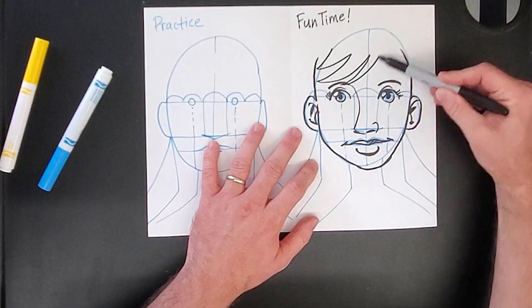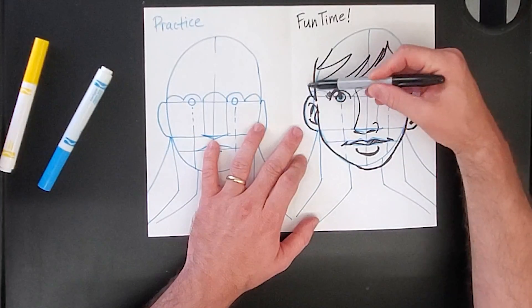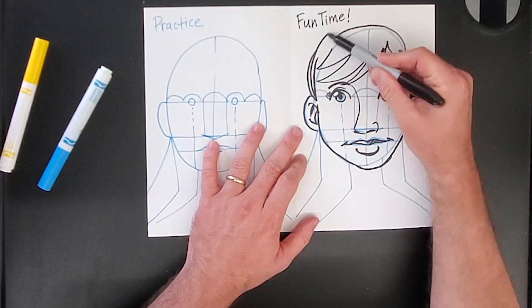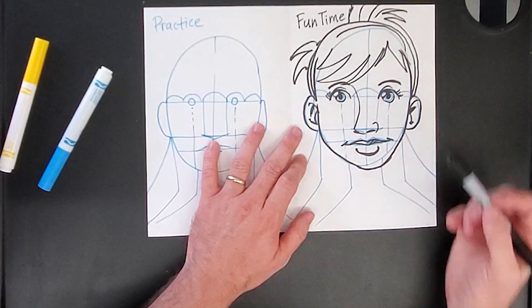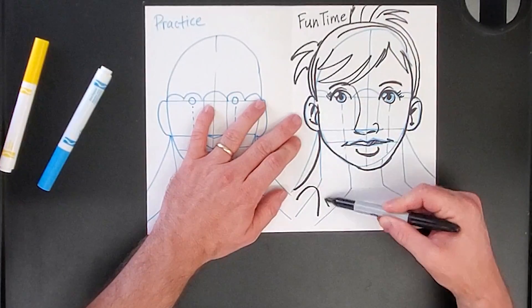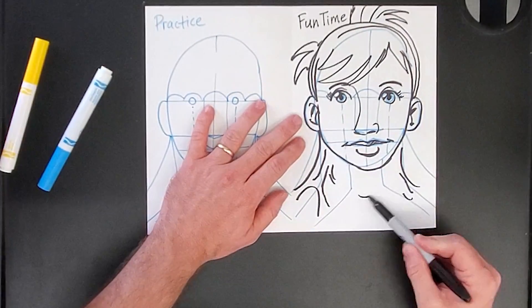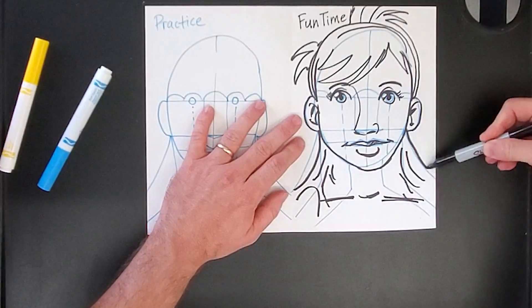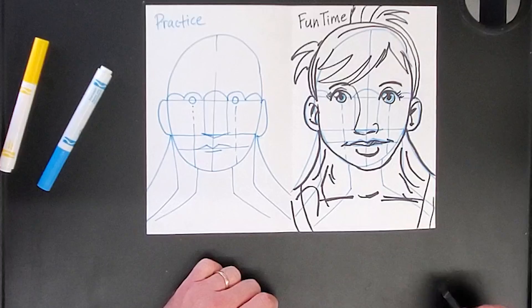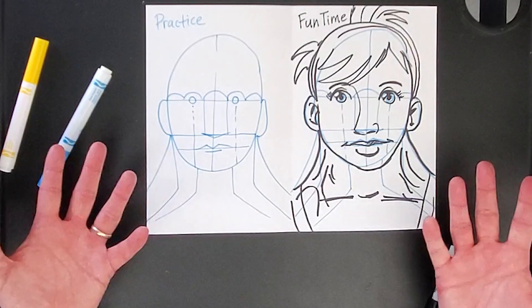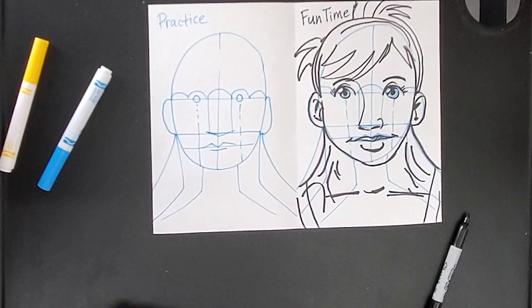And now just for fun, I'm going to do a gigantic wrestler neck with veins popping out. It looks gross, but basically just have fun and add whatever details make you laugh, make you giggle. See you next time. Bye.